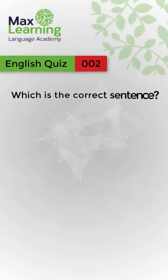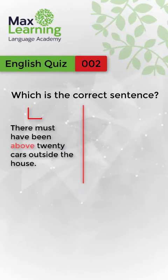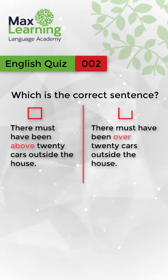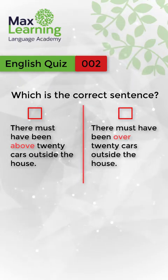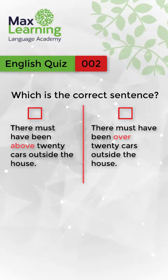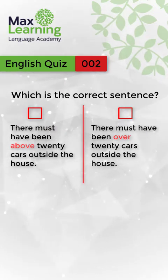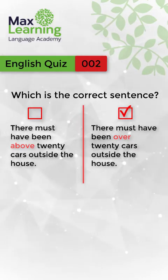Which is the correct sentence? Option A: There must have been above 20 cars outside the house. Option B: There must have been over 20 cars outside the house. I'll give you some time to think. The correct sentence is: There must have been over 20 cars outside the house.